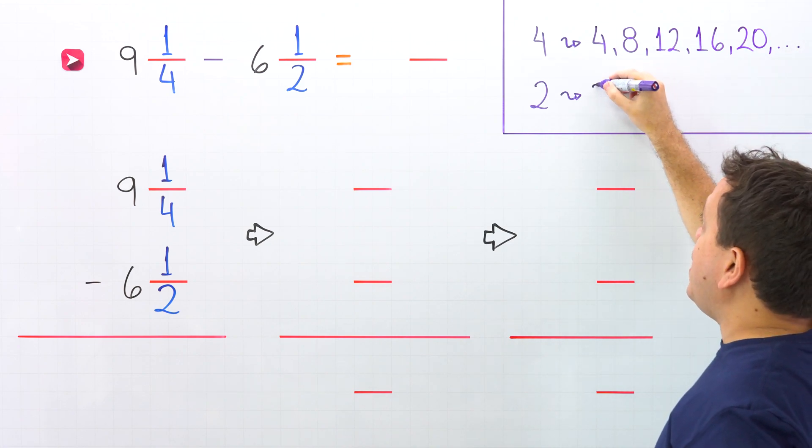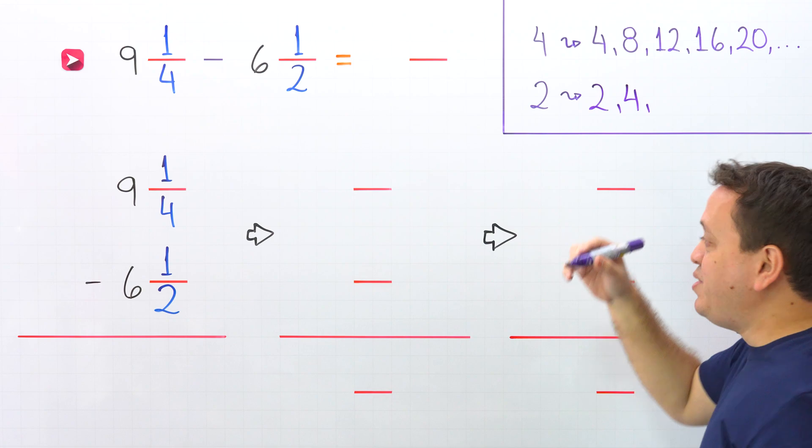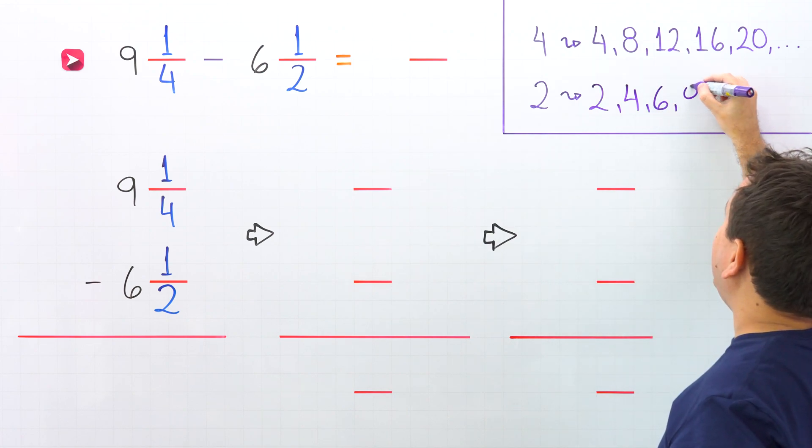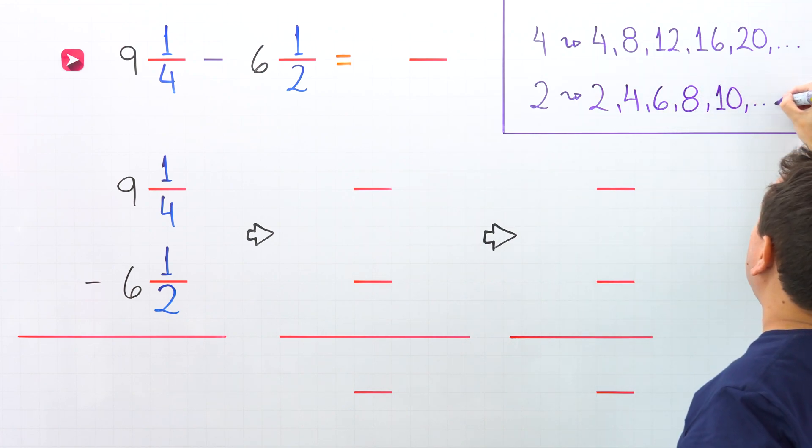The first multiples of 2 are 2, then we have 4, then comes 6, that is correct, then we have 8, 10, and so on.